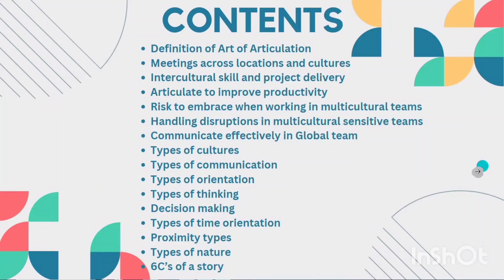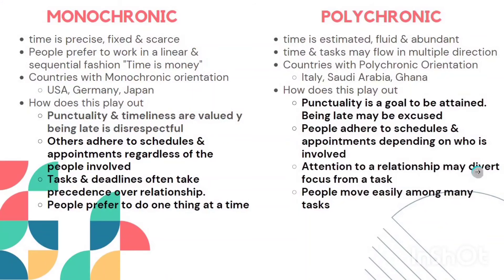Types of orientation — first we'll look at monochronic and polychronic. Monochronic orientation is where time is precise, fixed, and scarce. People prefer to work in a linear and sequential fashion; for them, time is money.